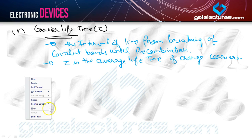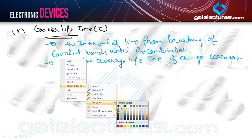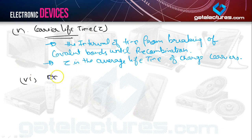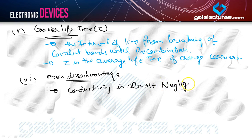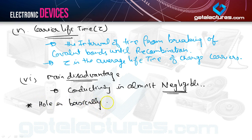The last point regarding the intrinsic semiconductor is to discuss its main disadvantage. The main disadvantage of the intrinsic semiconductor is that its conductivity is almost negligible. It is important to note that the conductivity of an intrinsic semiconductor is almost negligible. Also note that a hole is basically an absence of an electron with a positive charge.